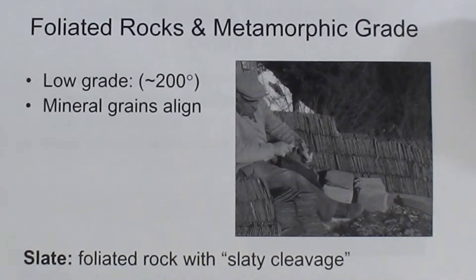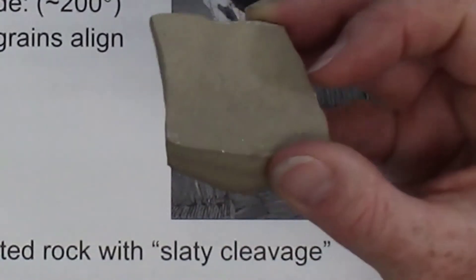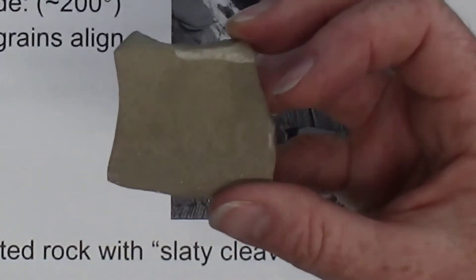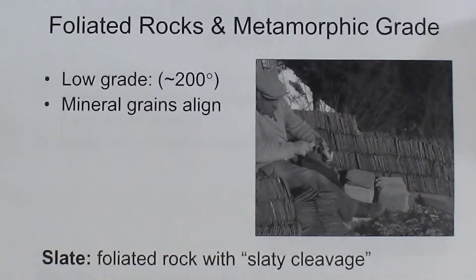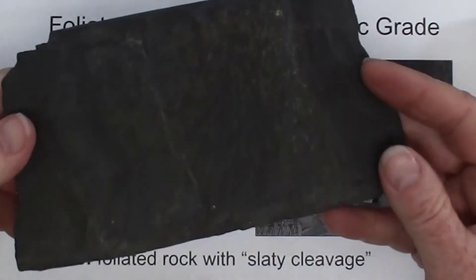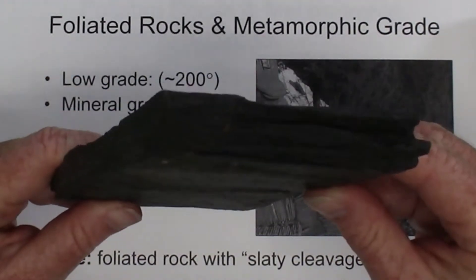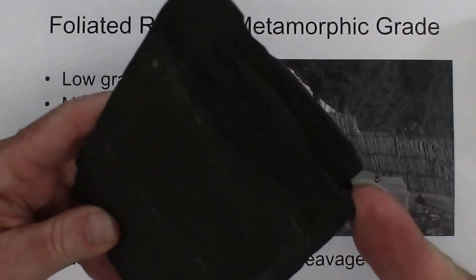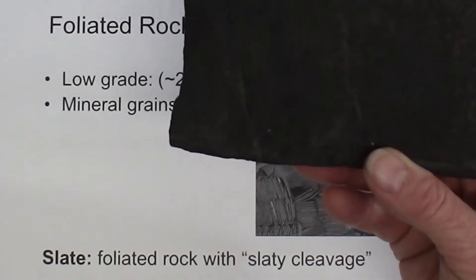Next we'll look at a sequence of common foliated metamorphic rocks going from low grade to high grade. Assuming our protolith is a sedimentary rock made of clay minerals — such as shale — if it's subjected to burial and high pressures, it starts to become metamorphosed. Under low grade conditions, the clay minerals align more strongly and you get a low grade foliated metamorphic rock such as slate. Slate has a type of foliation called slaty cleavage; the minerals are too small to be seen with the naked eye, but the rock cleaves into flat sheets.